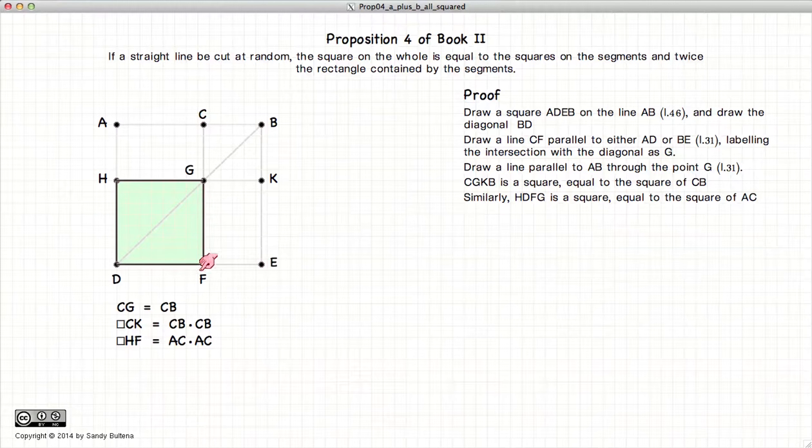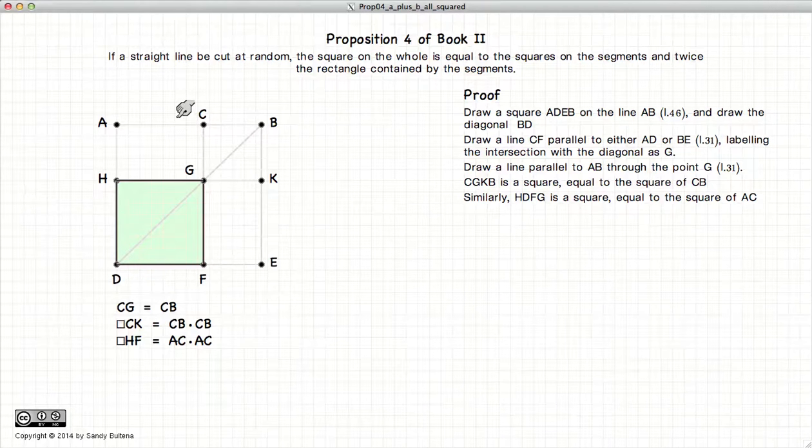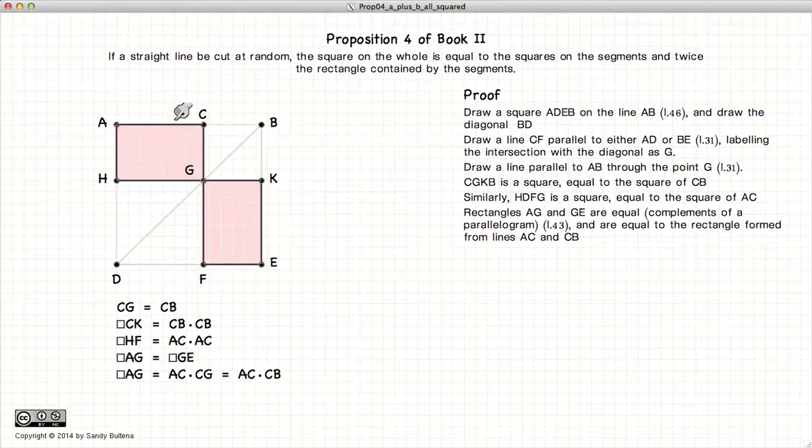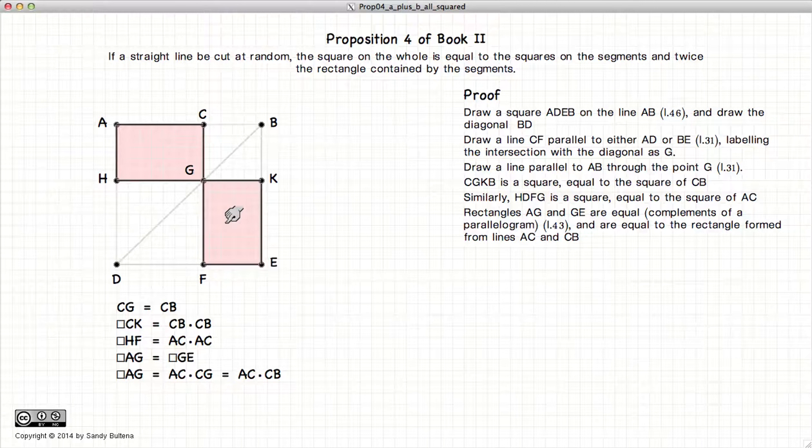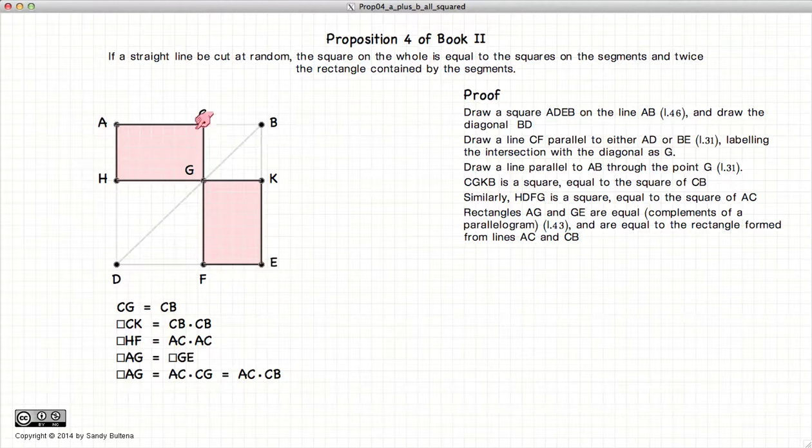Similarly, HF is a square equal to AC times AC. Looking at the complements of our parallelogram, Proposition 43 states that complements of any parallelogram are equal in area. We've established that CG equals CB.